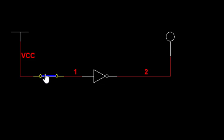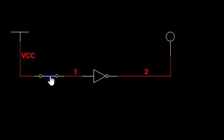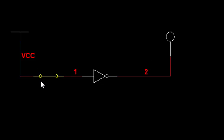For input 0 output becomes 1, and for input 1 output becomes 0. When the switch is open, input is 0, so the output indicator is glowing — that means output is 1. When the switch is on, input is 1, output is 0. That's how we check the working of a NOT gate.